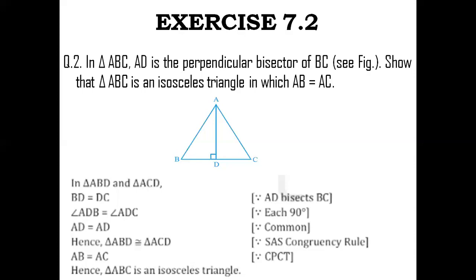So what have we proved? BD is equal to DC, angle ADB is equal to angle ADC, and AD is equal to AD. By the SAS congruency rule, I can state that triangle ABD is congruent to triangle ACD. As part of CPCT, I can conclude that AB of triangle ABD is equal to AC of triangle ACD. That's what I was supposed to prove — AB is equal to AC. Hence, triangle ABC is an isosceles triangle.